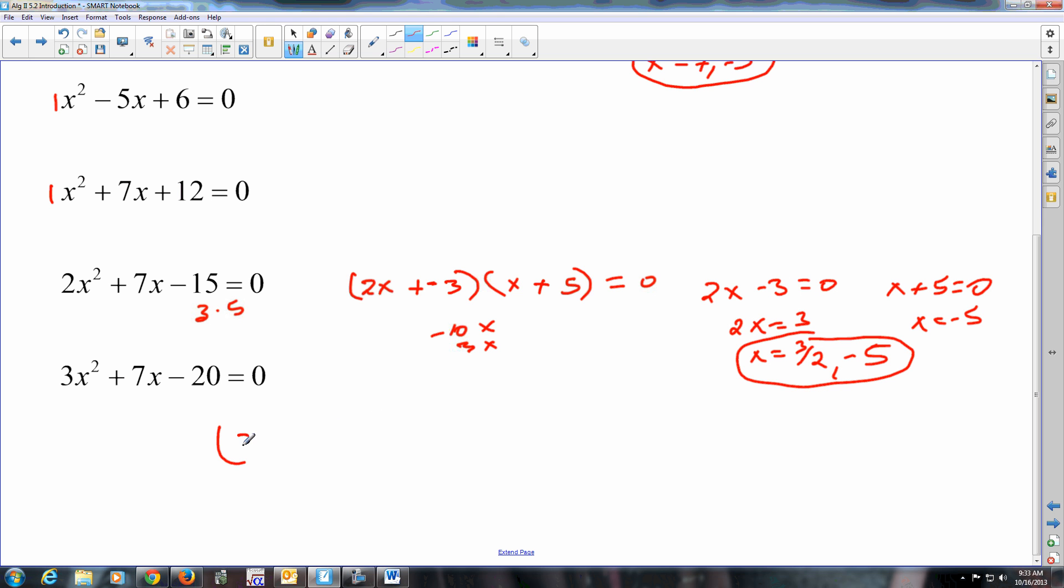This one's going to work real similar. 3x, x, 20. So 4 and 5. I'll go 5 and 4, see if that works. Negative 12x plus 5x gives you negative 7x. I want a positive 7x. Again, I made a sign error. Now you set these things equal to 0. Add the 5, divide by 3. Subtract the 4 to the other side once you set it equal to 0. Negative 4.